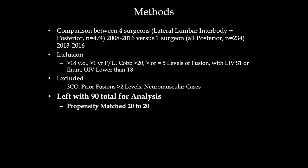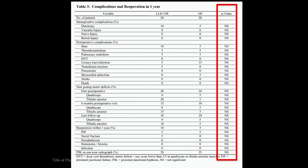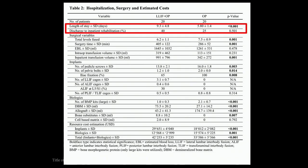We looked at patients who had greater than five levels of fusion, an LIV that went to S1 or the ileum, and a UIV lower than T8 — all adult deformity patients. We excluded three-column osteotomies, prior fusions greater than two levels, and neuromuscular cases such as Parkinsonian or MS patients. We did a propensity-matched analysis, and the matching worked out pretty well with no real difference in complication rates.